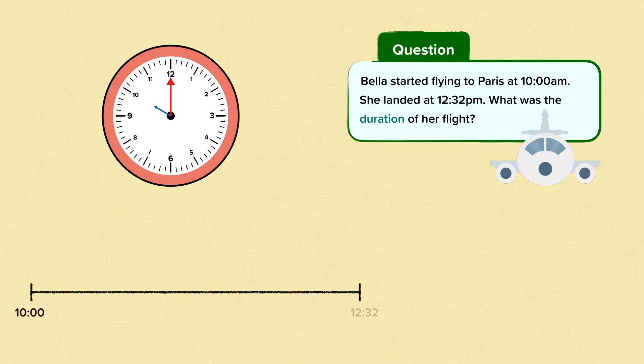Let's create another number line. It starts at 10 o'clock and ends at 12:32. We count 1 hour to 11 o'clock, another hour to 12 o'clock, and then we need to count in minutes to reach 12:32: 10, 20, 30.